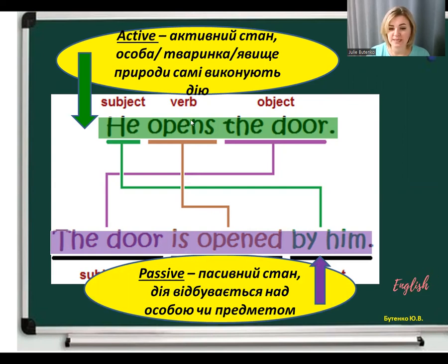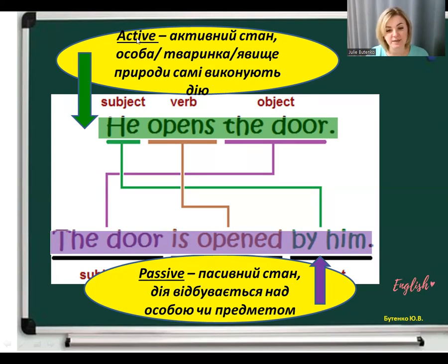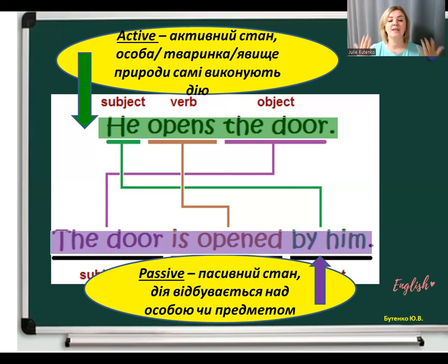He opens the door – він відчиняє двері. Він виконує дію, значить це Active voice – активний стан. The door is opened by him – двері відчинені ним. Дія над дверима. Коли людина робить щось сама – це активний стан. А коли дія відбувається над предметом чи особою – це пасивний стан – passive.